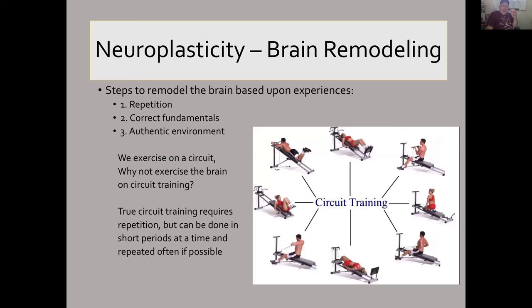Circuit training. We go to the gym, we exercise our muscles, they get bigger. By exercising our muscles, we're also strengthening the bone and they get stronger. It's not tremendously illogical to think — what if we can do the same thing for the brain? So here's what I'm proposing: that we can remodel the brain based on learning upon experiences of repetition, correct fundamentals, doing it the right way in an authentic environment. That authentic environment can be anywhere — out in the woods next to your favorite waterfall, in your home, or in a classroom. Why not exercise the brain?